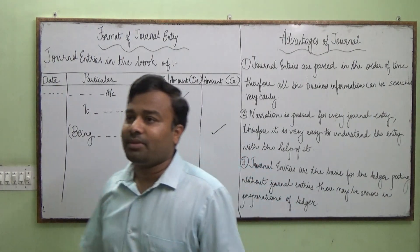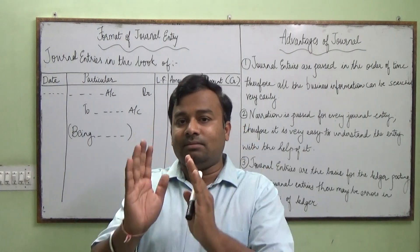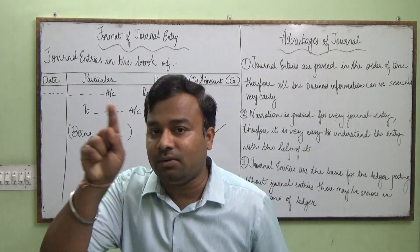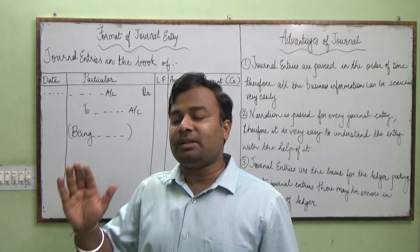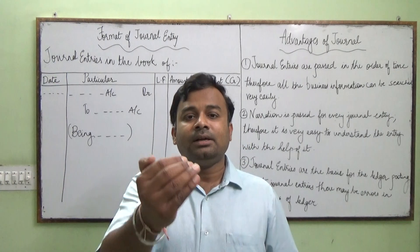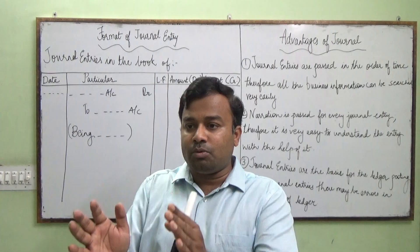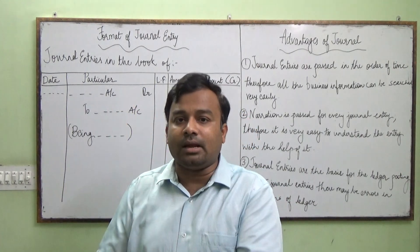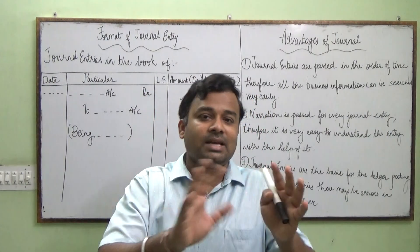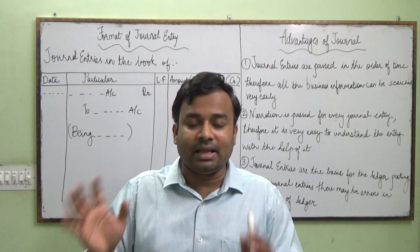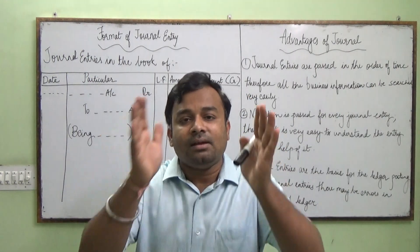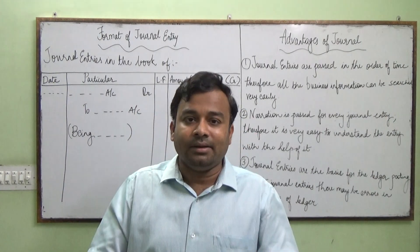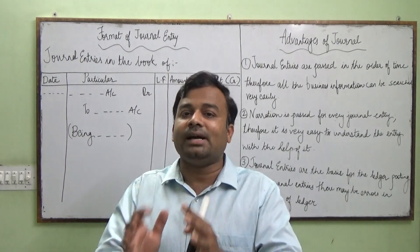First we discuss the format of journal. The first step of accounting is to identify and record monetary transactions. The method we use to record monetary transactions in books and accounts is called journal entry. It's a fixed format. Transactions are recorded in the form of journal entry using this fixed format.